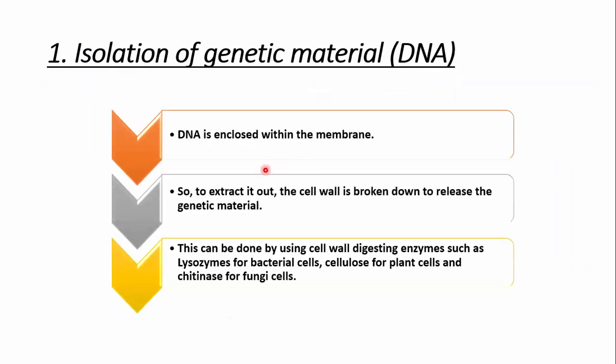The first step is isolation of genetic material. We isolate our desired DNA in its pure form. Since DNA is present within the cell membrane alongside many other macromolecules like RNA, polysaccharides, proteins, and lipids, it must be separated and purified using enzymes such as lysozyme, cellulase, and chitinase. The cells are broken to release the genetic material, other macromolecules are removed by enzymes and physical treatment, and addition of ethanol causes the DNA to precipitate as a fine thread, which is then spooled out to give purified DNA.